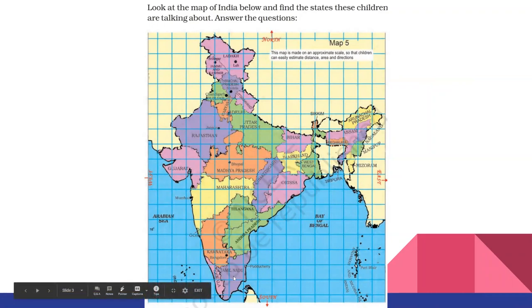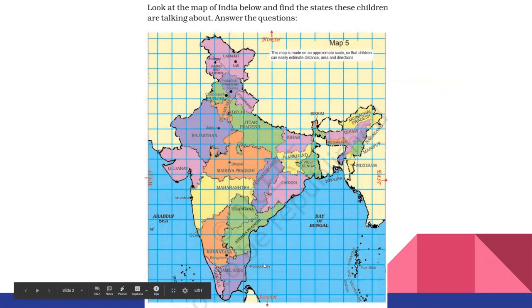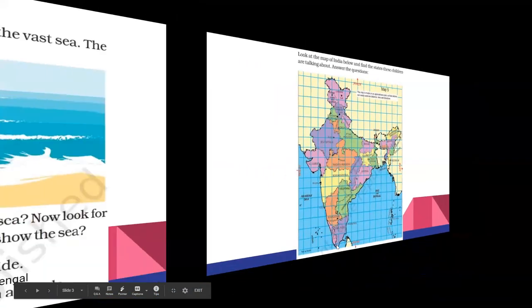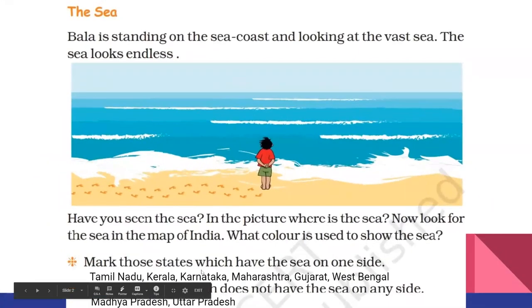Starting from the south, Tamil Nadu, Kerala, Karnataka, Maharashtra, Gujarat, West Bengal, etc. have sea on one side.